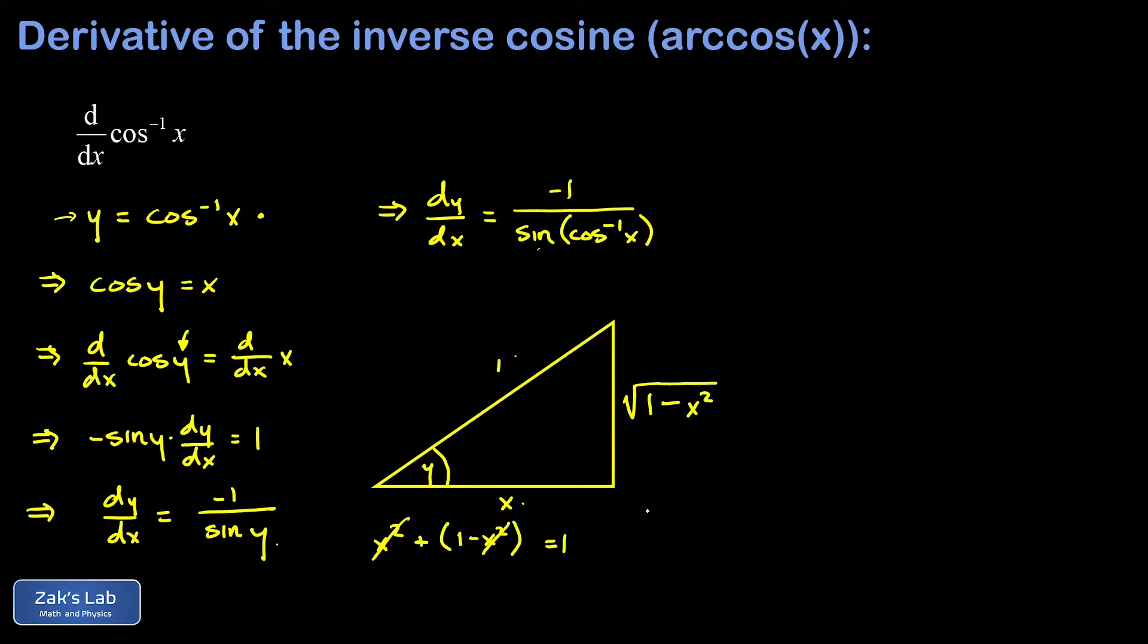Now I want the sine of this angle, the sine of the angle whose cosine is x, and that's the opposite over the hypotenuse. The hypotenuse is just one so I'm not even going to write division by one, I just have the square root of one minus x squared. We go back to our derivative: I have dy/dx is equal to negative one over the sine of the angle whose cosine is x, which we just figured out is one minus x squared square rooted. And there's our formula for the derivative of the inverse cosine function.